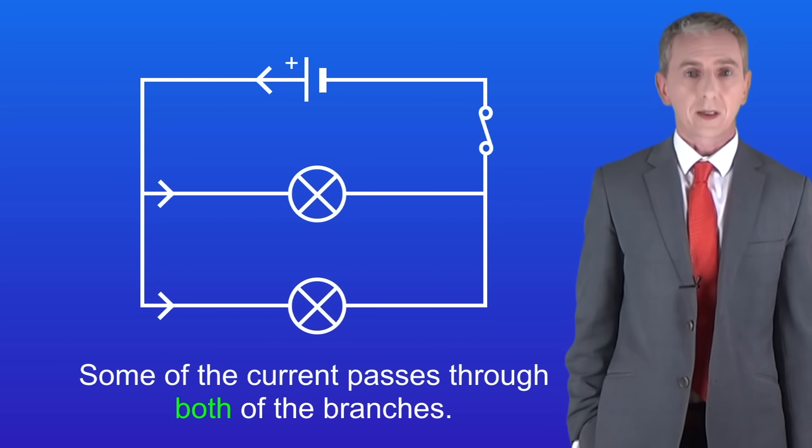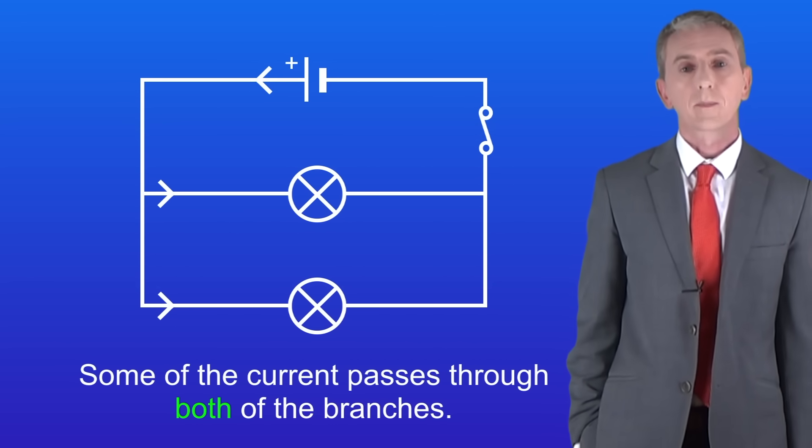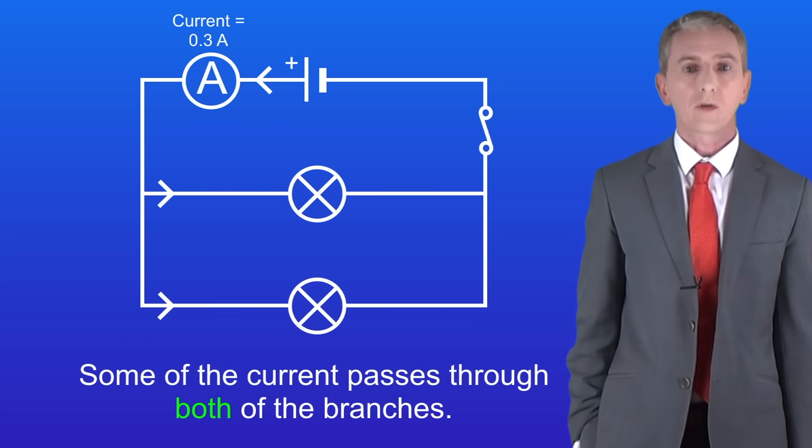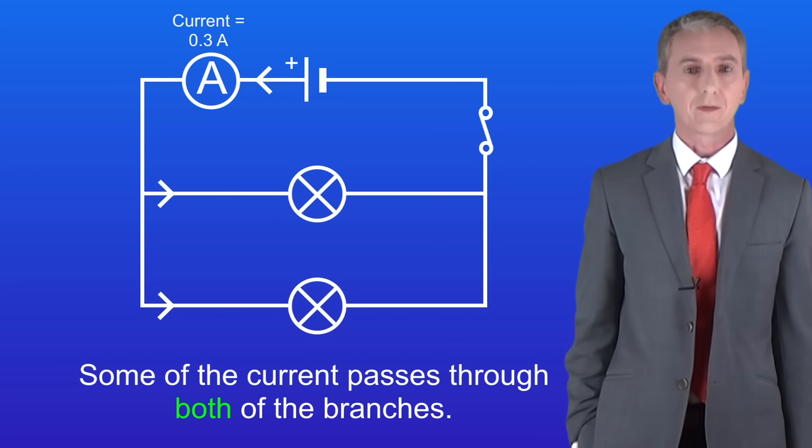So we're going to use ammeters to see how the current splits. The top ammeter measures the current leaving the cell. As you can see a current of 0.3 amperes is leaving the cell.